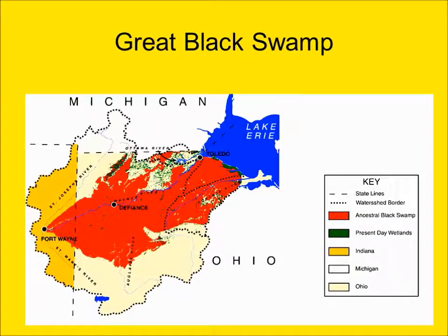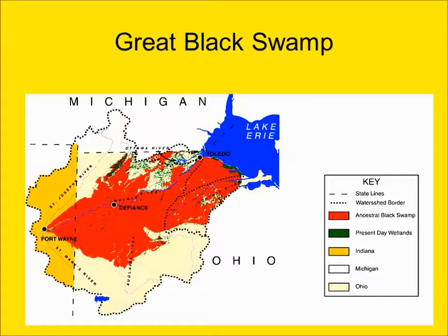In this next image, you can see some of the features of the swamp. The red indicates the ancestral Black Swamp, the Great Black Swamp. The yellowish region shows portions of Indiana that were once part of the swamp. The border of the watershed, or the boundaries of the swamp, are noted by the dotted lines here. You can see that the Great Black Swamp encompassed areas of southeastern Michigan, eastern Indiana, and much of present-day northwest Ohio.